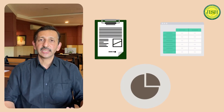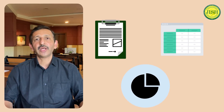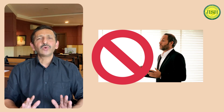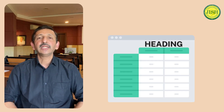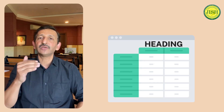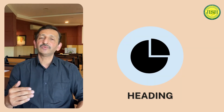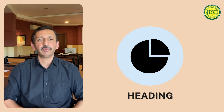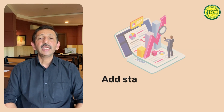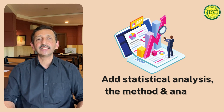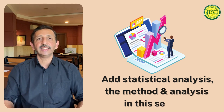In the Result section, results can be shared in terms of text, tables, or figures. There is no explanation given in this section, but tables and figures should be self-explanatory. Remember: the heading for a table goes on the top of the table, and the heading for a figure goes at the bottom of the figure. If you have done statistical analysis, you can add the method and result of that analysis here.